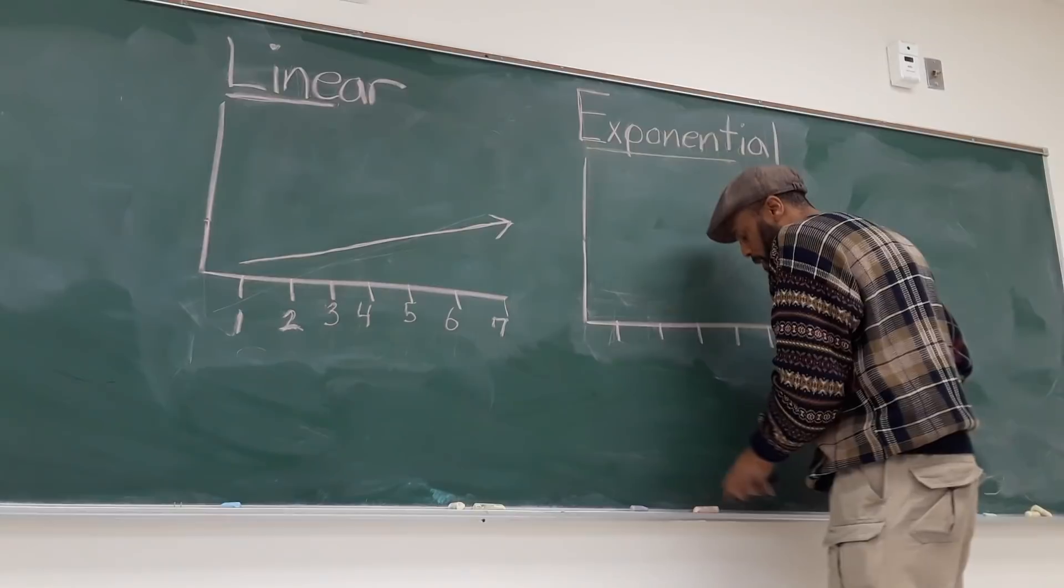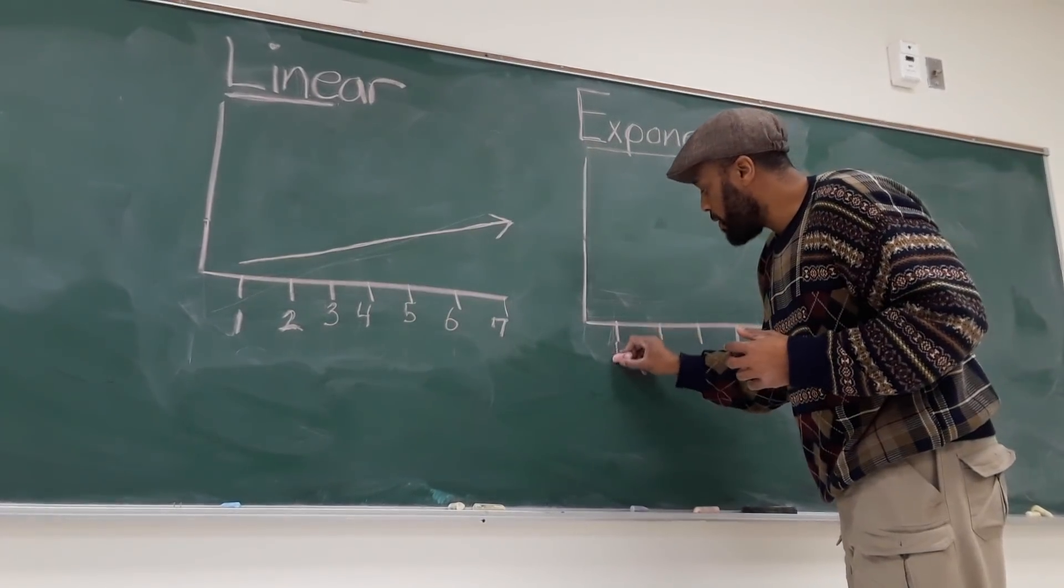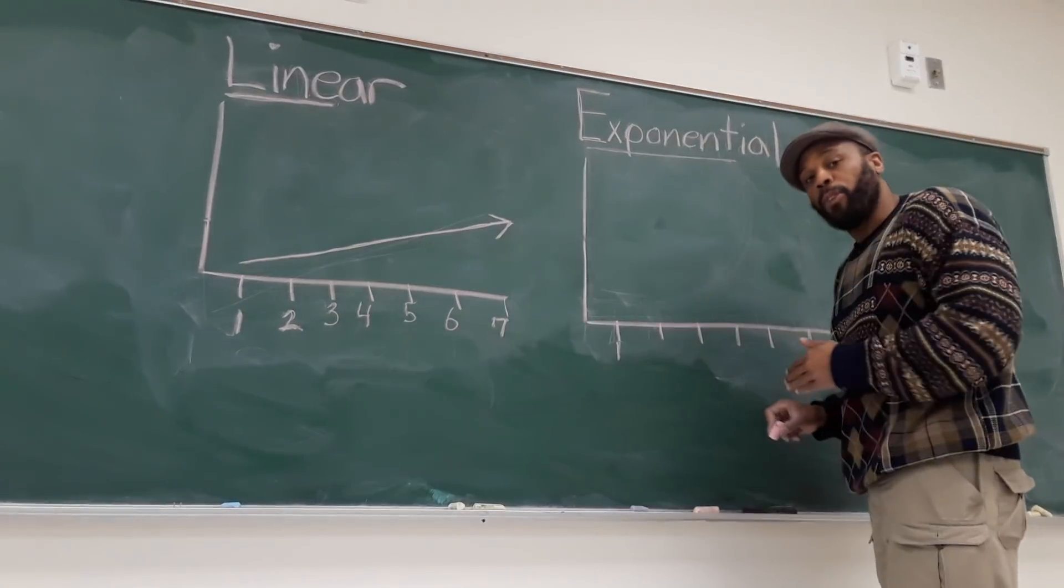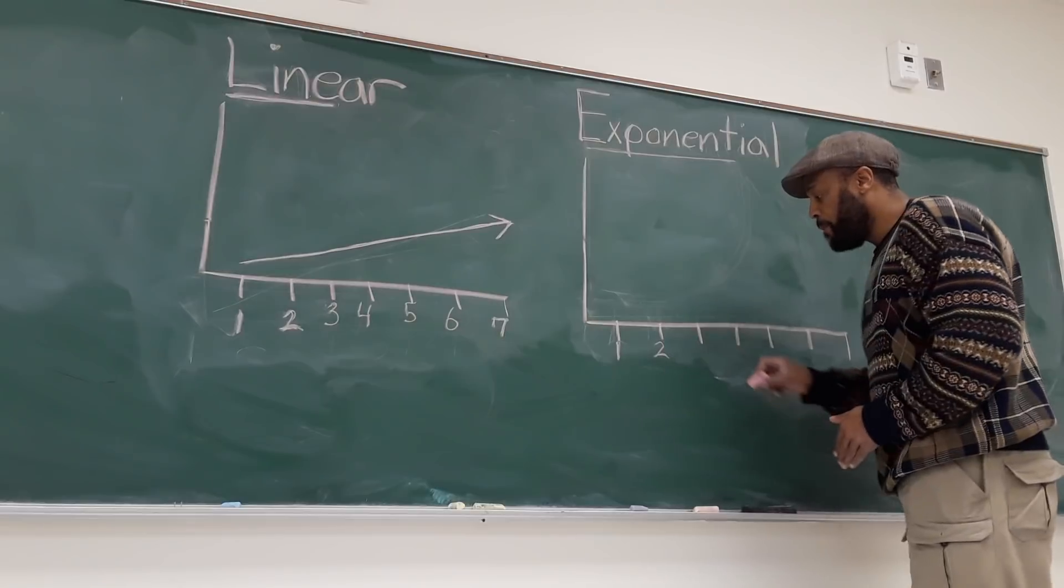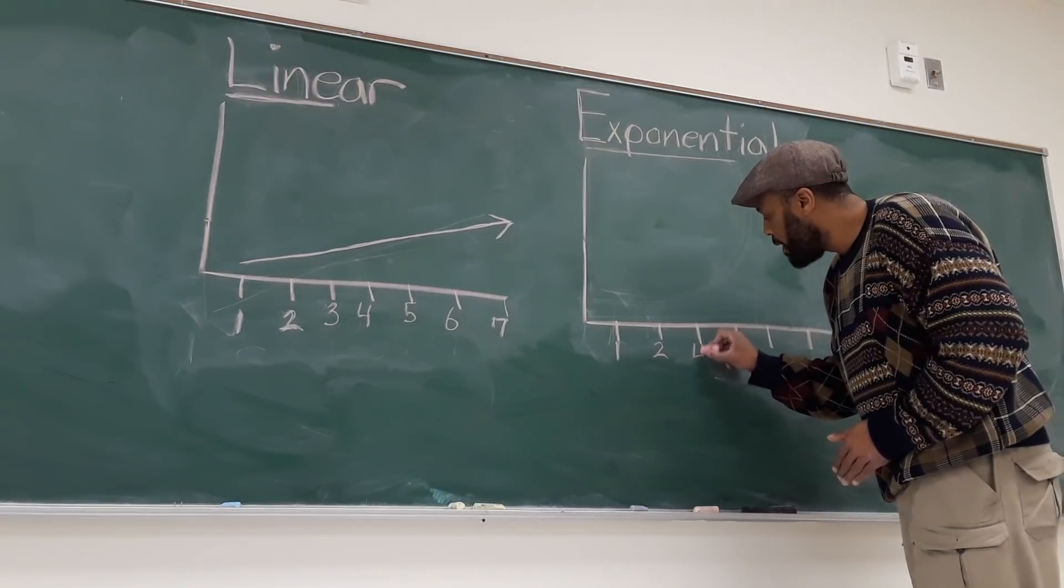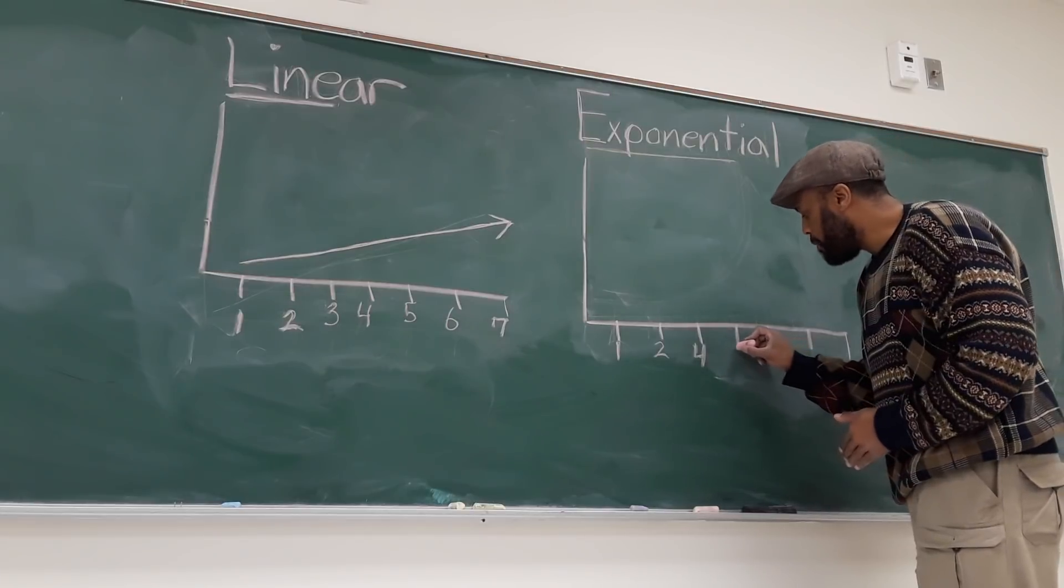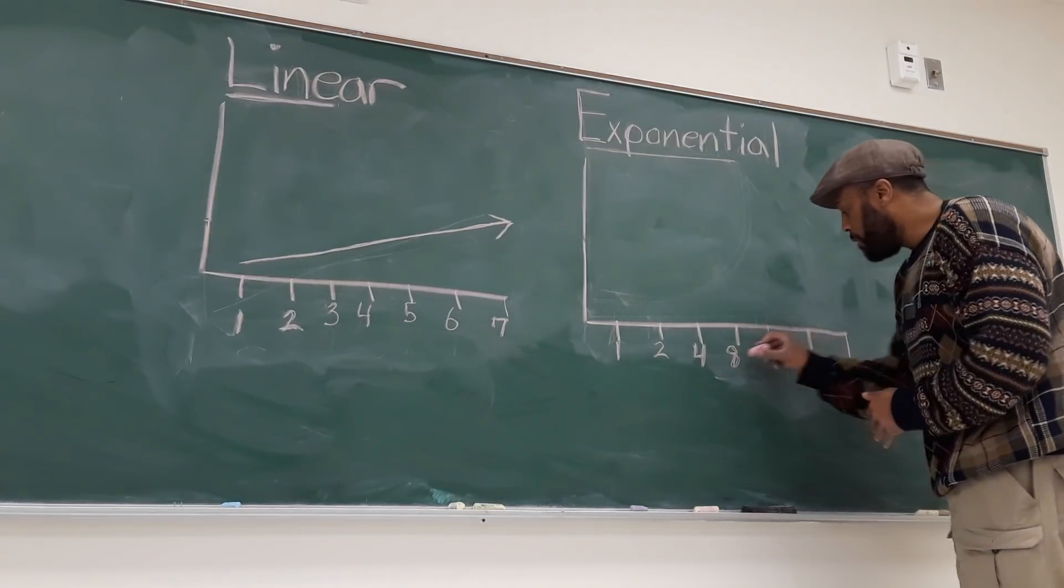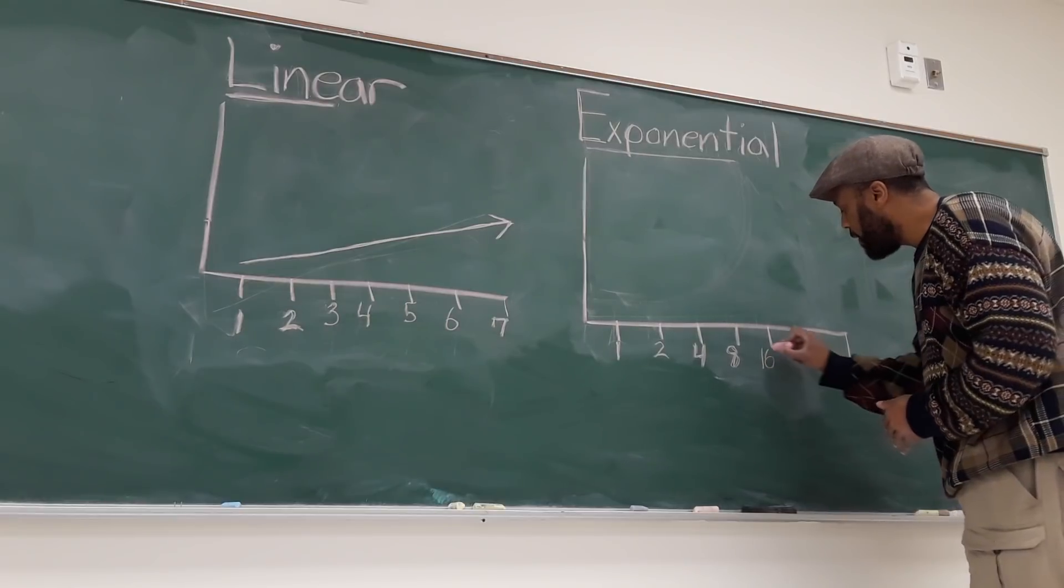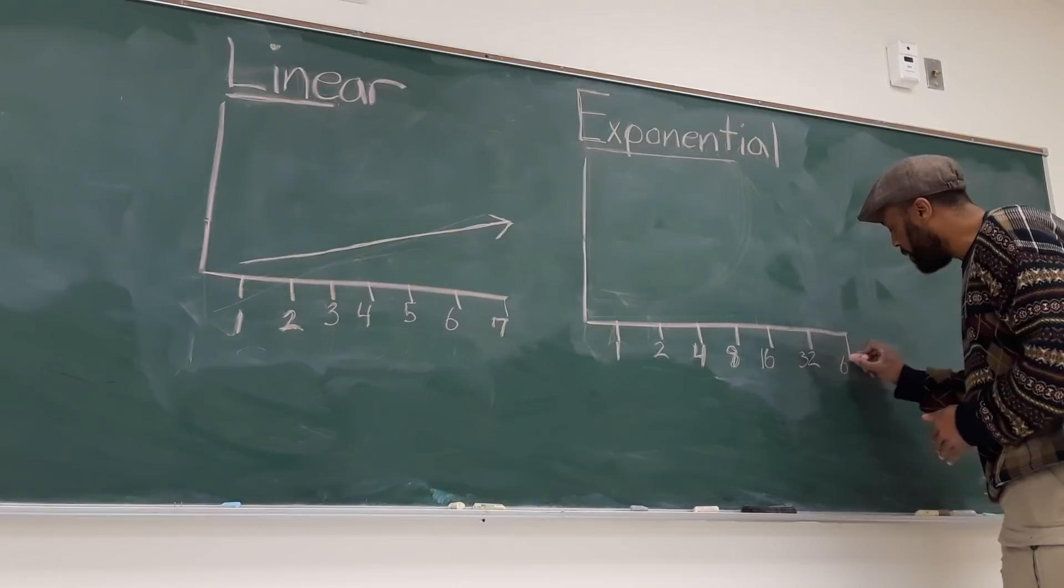So if you wanted to do an exponential growth model, if you started off with one person today and you doubled it, tomorrow you're going to have two people. If you double that, you're going to have four people. Double that on the fourth day, eight people. The fifth day, if you double that, 16. Sixth day, 32 people. And then by the end of the week, you got 64 people.